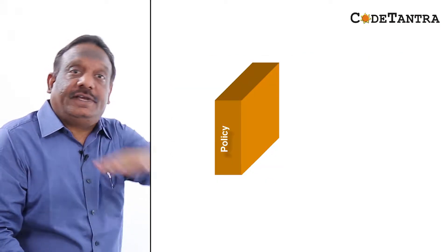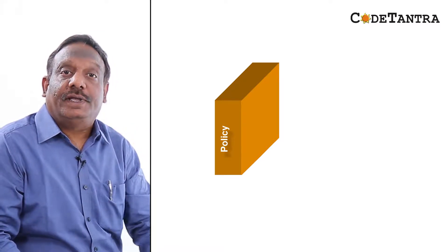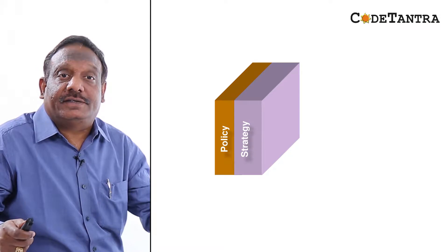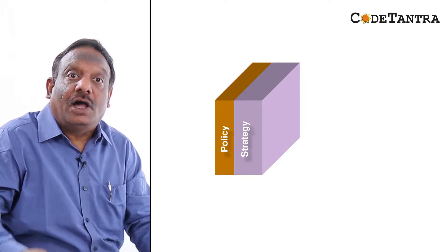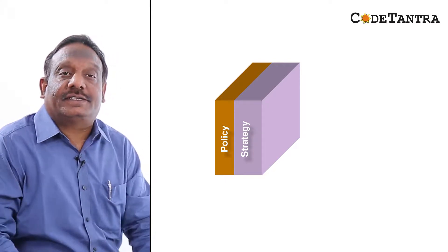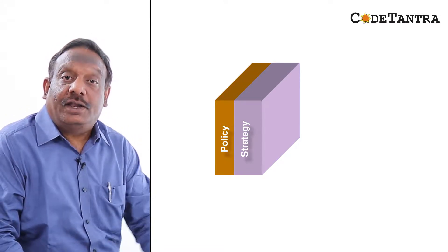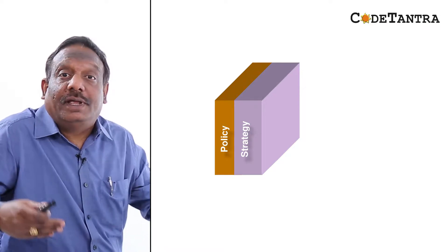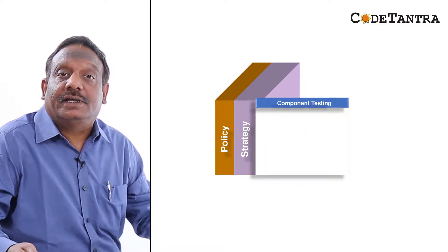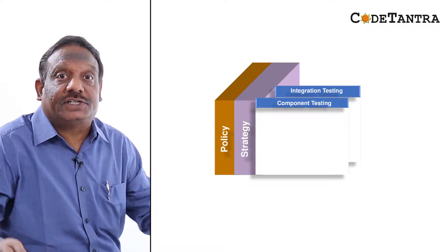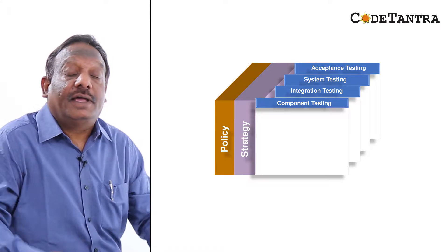At a company level we have a test policy, which identifies the testing mission for the company. This is followed by the testing strategy, which talks broadly about what test levels are to be implemented, how testing is to be done at those levels, and states testing objectives in a measurable way. A company may then do multiple levels of testing — component testing, integration testing, system testing, and user acceptance testing.